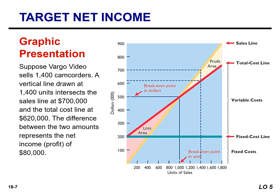We can also use the CVP graph to find the sales required to meet target net income. In the profit area of the graph, the distance between the sales line and the total cost line at any point equals net income. For example, suppose Vargo sells 1,400 cell phones. The vertical line at 1,400 units intersects the sales line at $700,000 and the total cost line at $620,000. The difference between these two amounts represents the net income or profit of $80,000.